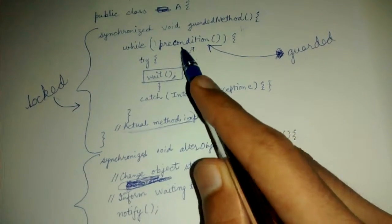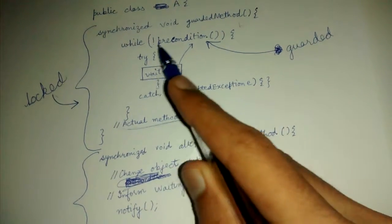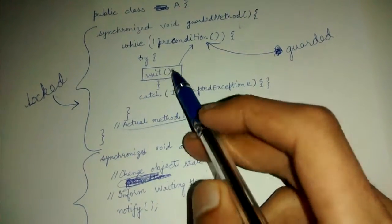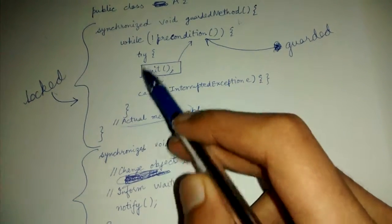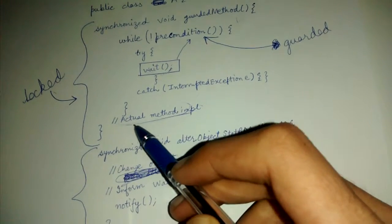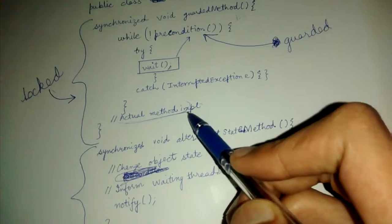Not of false, is true, then it will again go and wait. So it will wait till the precondition is false. As soon as the precondition becomes true, it will go out of this while loop and proceed with the actual method implementation.